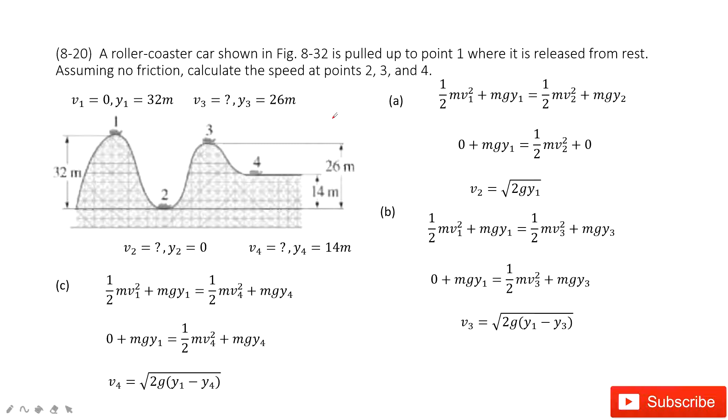In this problem we can see a roller coaster at different positions. At position 1, we know the initial velocity is 0 and y1 is 32 m.